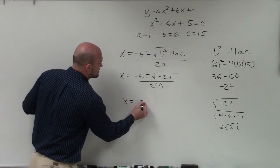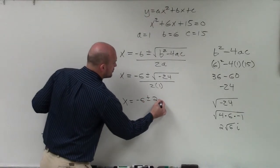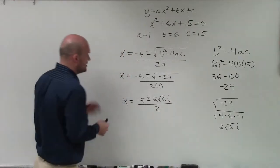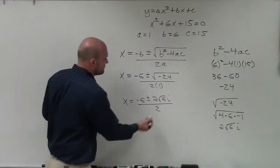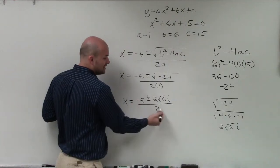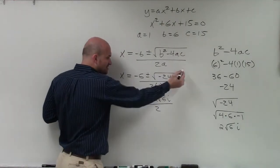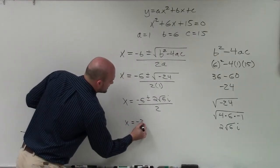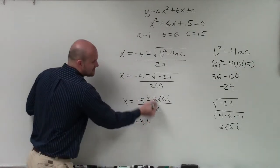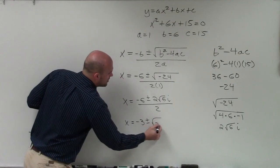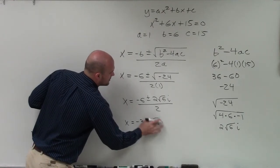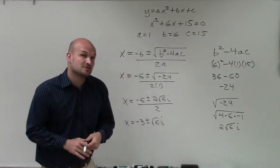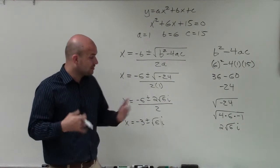So I have x equals negative 6 plus or minus 2 square root of 6i, all divided by 2. So now what I can do is I can actually divide my 2 into both of these terms. You've got to make sure this is all divided by 2a. So when I divide 2 into negative 6, I get negative 3 plus or minus. That goes to 1, the square root of 6. Don't want the i under the square root. The square root of 6i. So those are going to be my two solutions, which will be two complex or imaginary solutions.